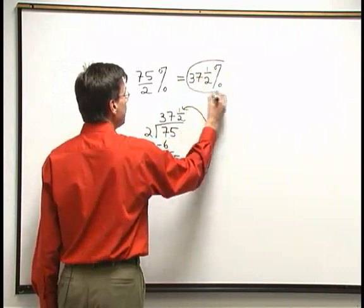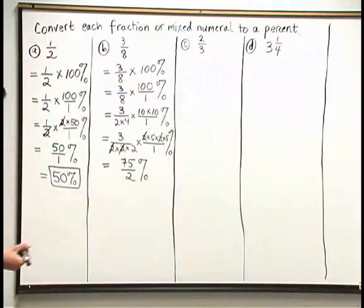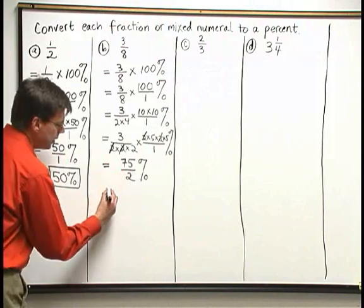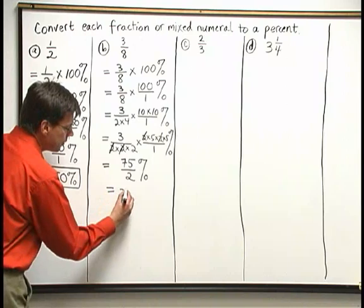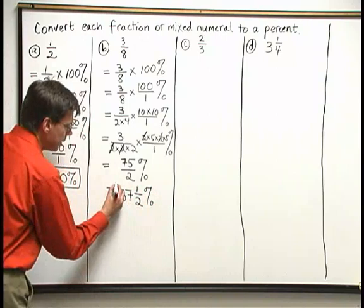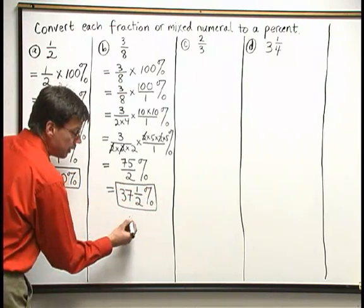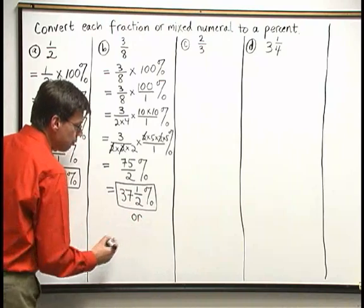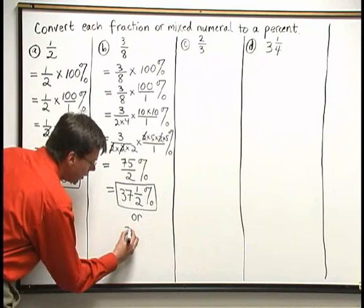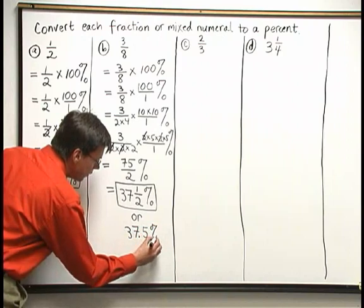Let's go ahead and put this back into our original problem. So we've just seen here that 75 halves percent is the same as 37 and one half percent. 37 and one half percent could also be written in a decimal form. Because one half is the same as the decimal point five, we could express this as 37 point five percent. Either form is fine. They both mean exactly the same thing.